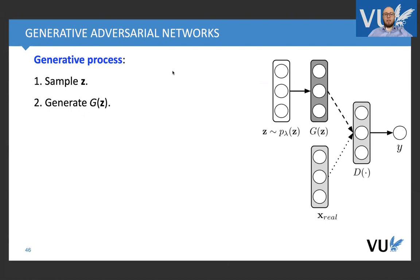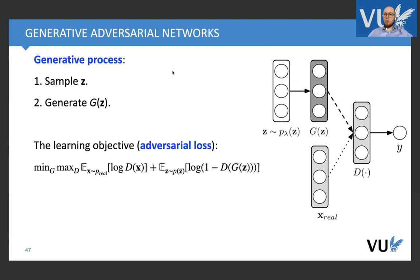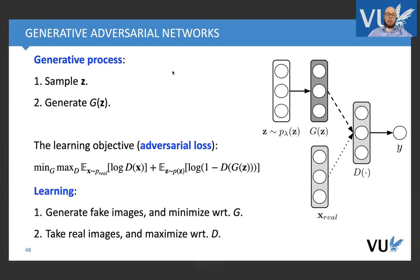The generative process of GANs is very simple. Once we trained everything, once we have all models, we can just simply sample Z from the prior and then we can generate new image. The learning objective, also called adversarial loss, because after this paper there are a lot of other papers talking about this adversarial. One is adversary to the other. This is the simplest possible adversarial loss. We just simply learn it in two stages. First we generate fake images and minimize with respect to generator, and then we take real images and these fake images and we maximize with respect to discriminator.